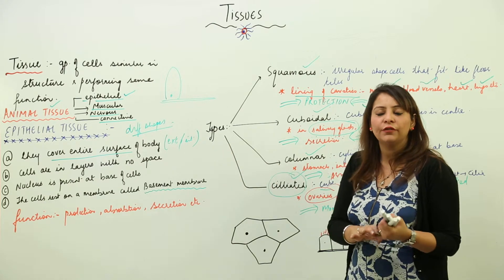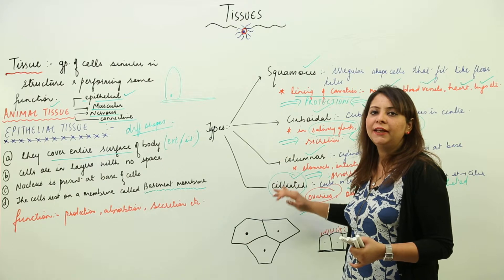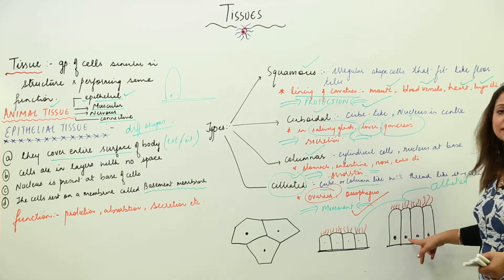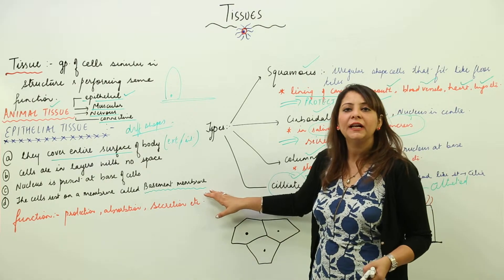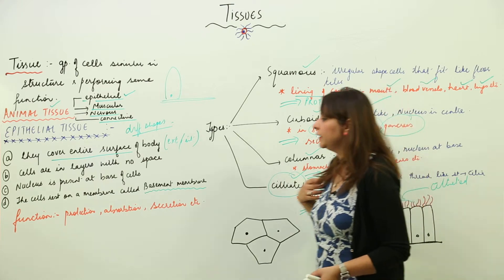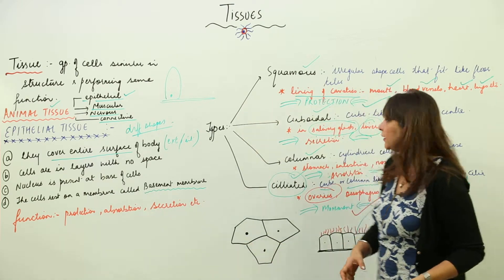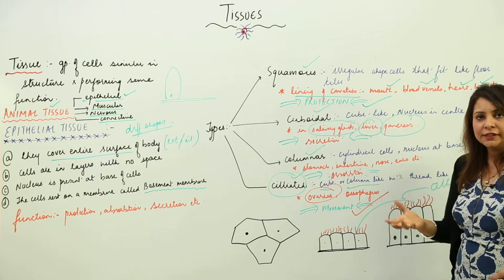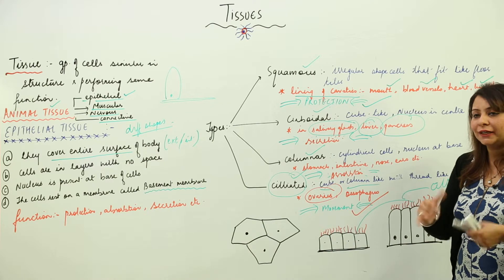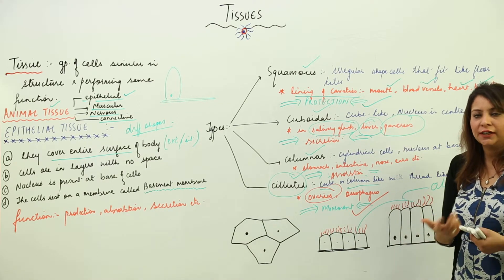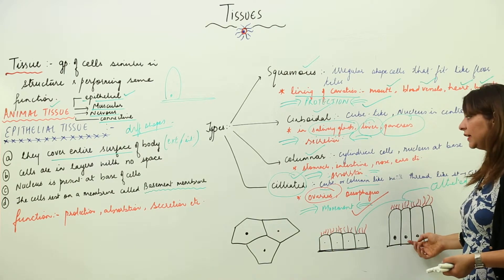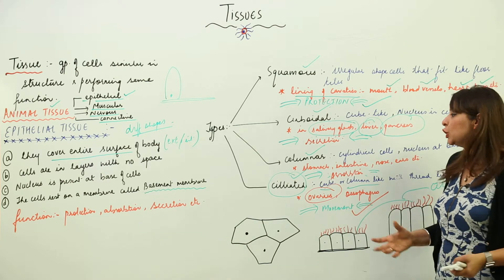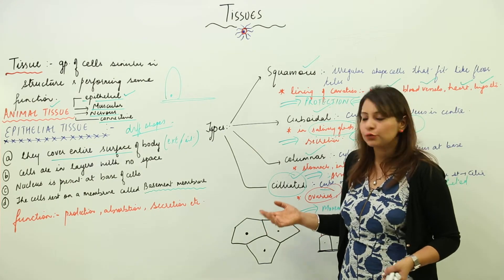To summarize: epithelial tissue forms an outer covering with cells of different shapes — irregular, cube-like, column-like, or cube/column with hair-like structures. The nucleus is mostly present at the base, and cells rest on a common basement membrane for support. Overall, epithelial tissue is involved in protection, absorption, secretion, and movement.